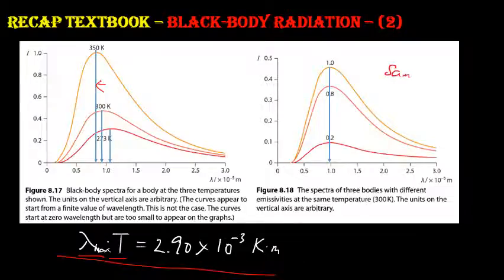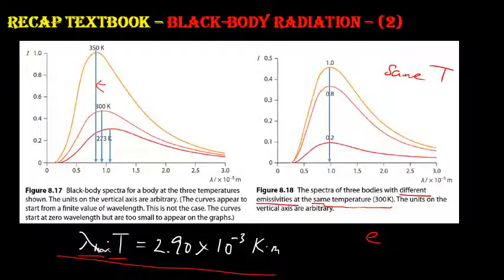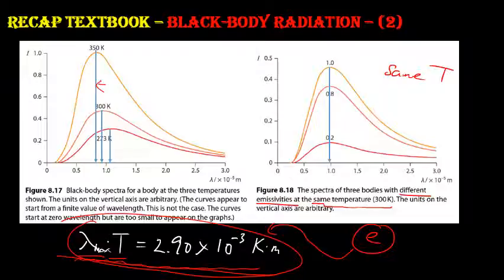The second graph shows objects at the same temperature but different emissivities. Since emissivity e does not appear in Wien's Displacement Law, the peak wavelength does not change — only the intensity of emitted radiation changes. So same temperature means same peak wavelength regardless of emissivity.